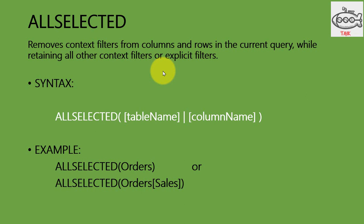The next is ALLSELECTED. ALLSELECTED removes context filters from columns and rows in the current query while retaining all other context filters or explicit filters. The syntax is ALLSELECTED, TableName or ColumnName. For example, ALLSELECTED(Orders) will respect whatever column values have been selected on that specific table. You can also use ALLSELECTED(Orders[Sales]), which will respect only the sales values which have been selected.